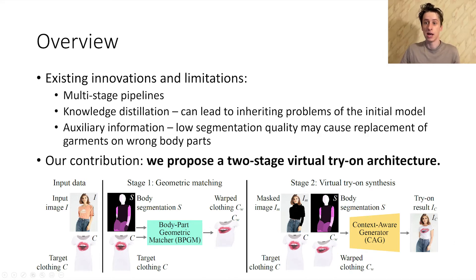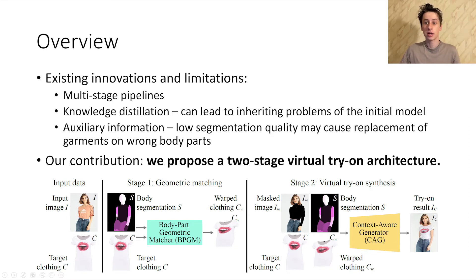For example, when poor auxiliary information is fed to the model, the garment transfer may occur on wrong body parts, or when knowledge distillation is used, it may still inherit some of the initial shortcomings of the teacher model. Current approaches struggle particularly with body and arm synthesis in difficult poses, which is one of the objectives that we aimed to resolve in this work.